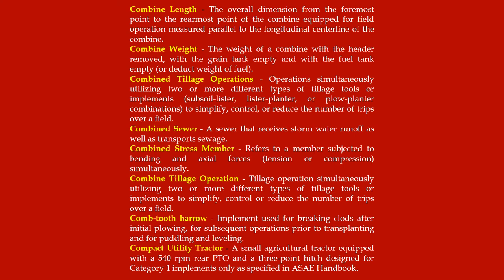Combined tillage operations: operations simultaneously utilizing two or more different types of tillage tools or implements — subsoil lister, lister planter or plow planter combinations — to simplify control or reduce the number of trips over a field. Combined sewer: a sewer that receives storm water runoff as well as transport sewage. Combined stress member: refers to a member subjected to bending in axial forces — tension or compression — simultaneously.